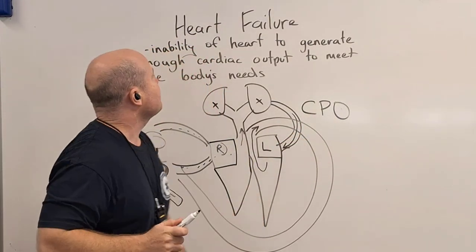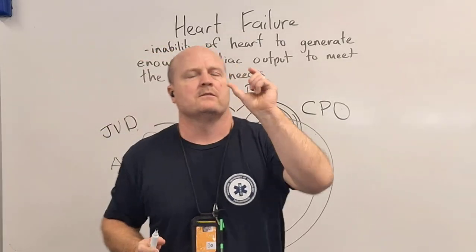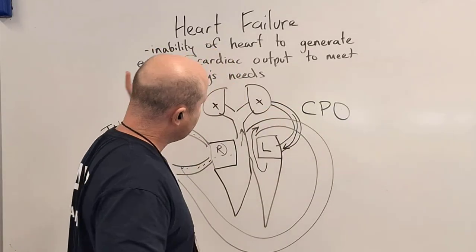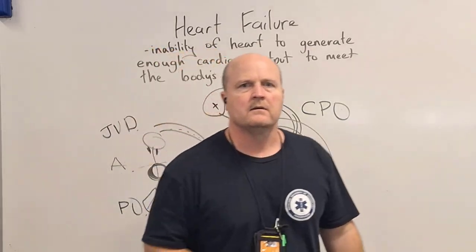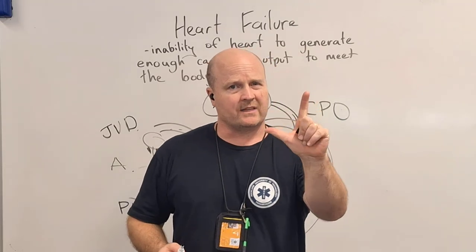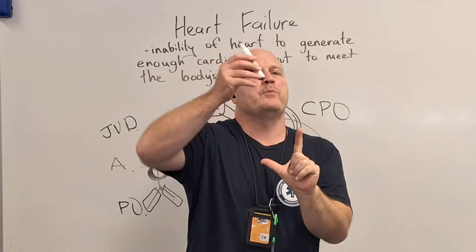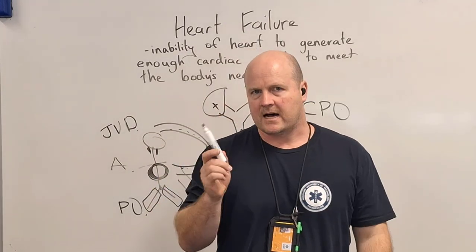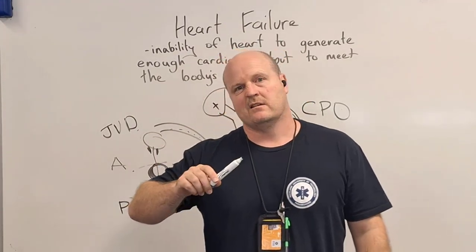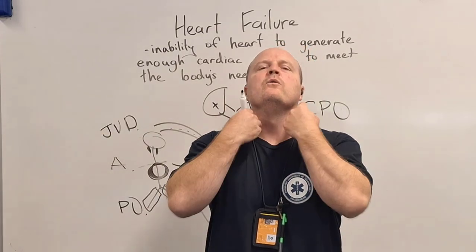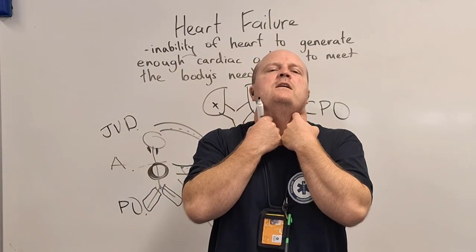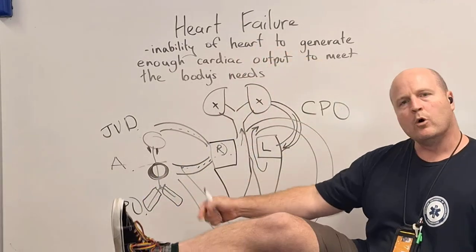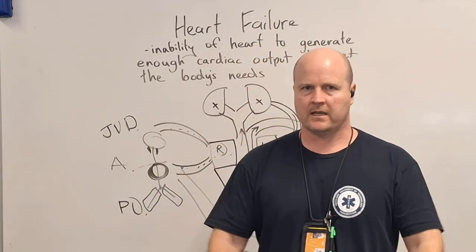There's heart failure — systolic and diastolic dysfunction, and left and right-sided heart failure. Remember: L for left, left backs up into the lungs — cardiogenic pulmonary edema. And R for right, right backs up into the rest of the body — jugular vein distension, ascites, and peripheral edema. All right team, happy studying.